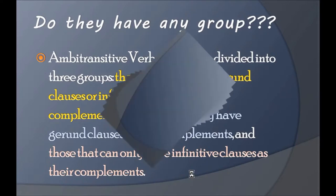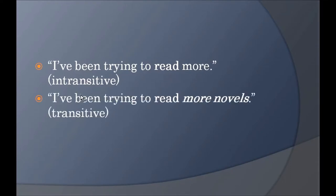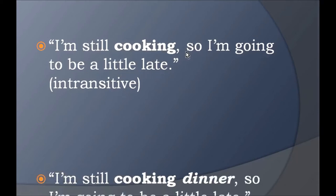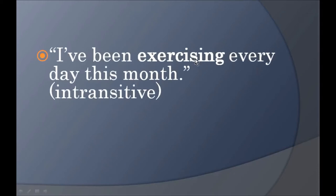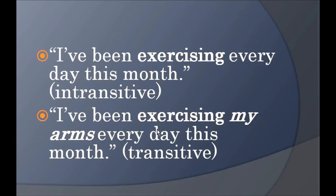Here are examples across the groups. 'I have been trying to read more' — intransitive; 'I have been trying to read more novels' — transitive, with an object. 'I'm still cooking, so I'm going to be a little late' — intransitive; 'I'm still cooking dinner' — transitive. 'I have been exercising every day this month' — intransitive; 'I have been exercising my arms every day this month' — transitive, with an object.